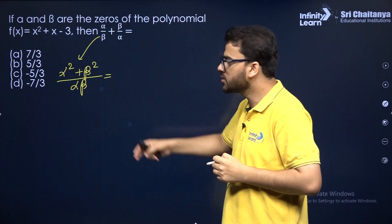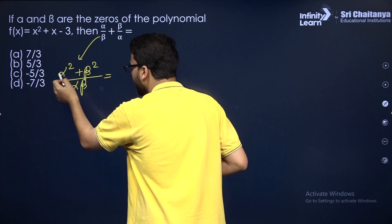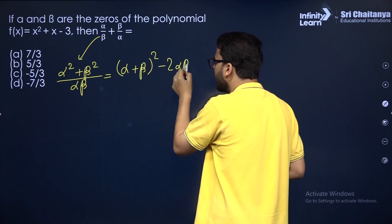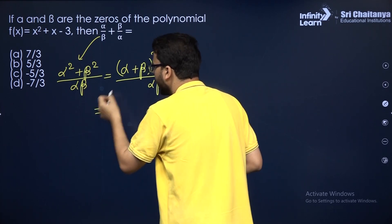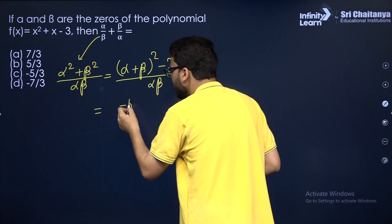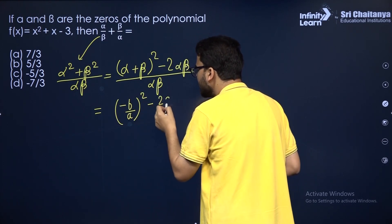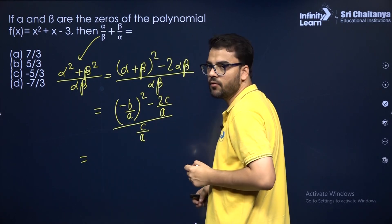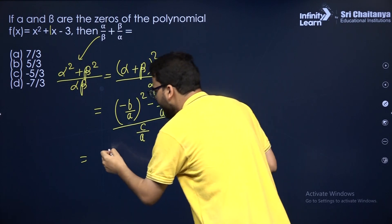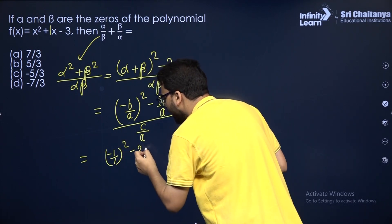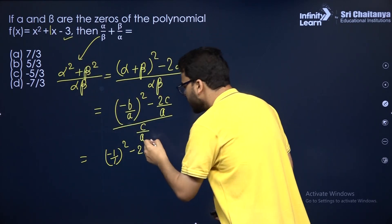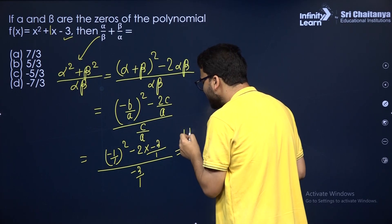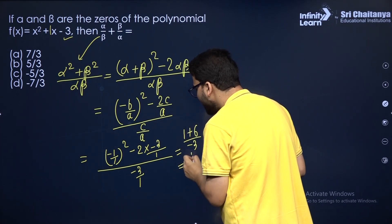Since you don't know α and β separately, you manipulate: α² + β² = (α + β)² − 2αβ. So the expression becomes [(α + β)² − 2αβ] / (αβ). For the polynomial x² + x − 3: α + β = −b/a = −1/1 = −1, and αβ = c/a = −3/1 = −3. Substituting: [(−1)² − 2(−3)] / (−3) = [1 + 6] / (−3) = −7/3.